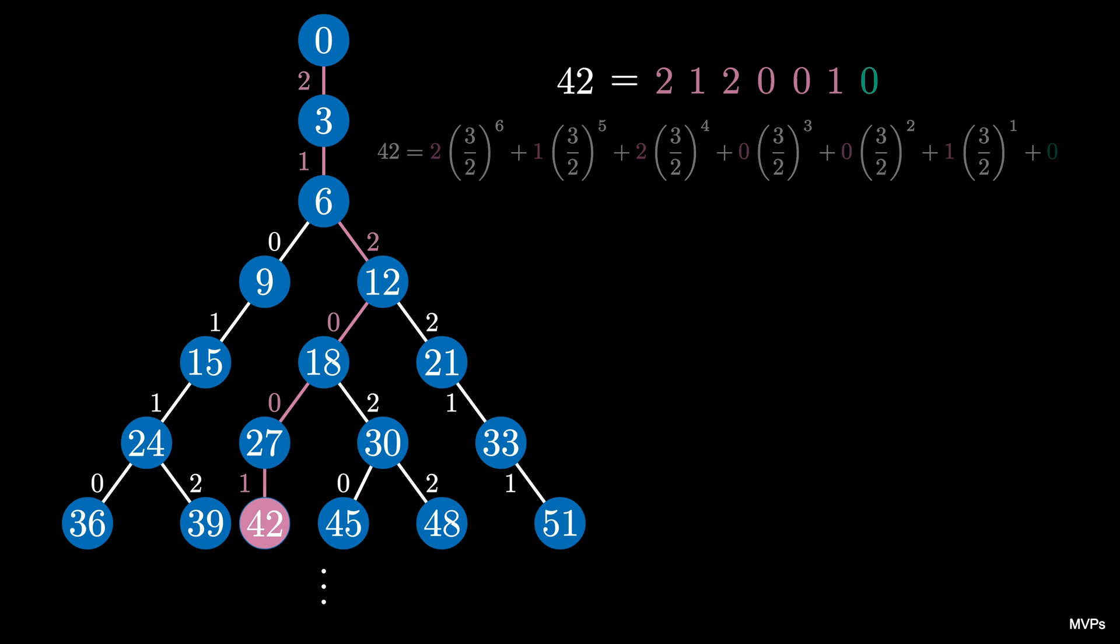To find the representations for the numbers that are between multiples of 3, we take the representation for the multiple of 3 and change the last digit to a 1 if the number is 1 more than a multiple of 3, like 43, or we change the last digit to a 2 if the number is 2 more than a multiple of 3, like 44. The representations for these three numbers all start with the path from 0 to 42, but end in different digits.